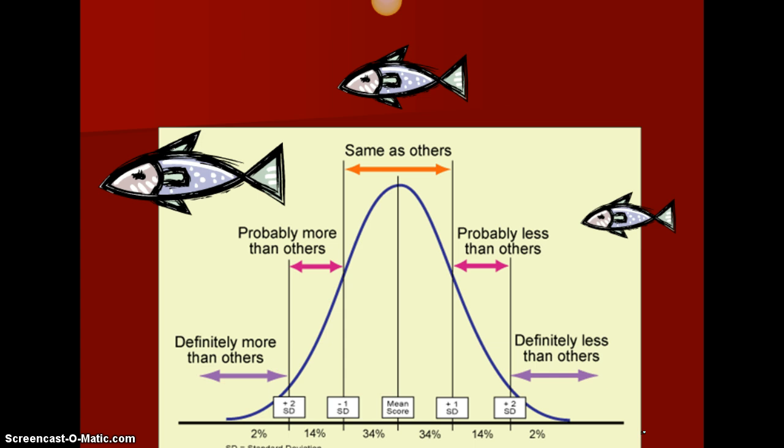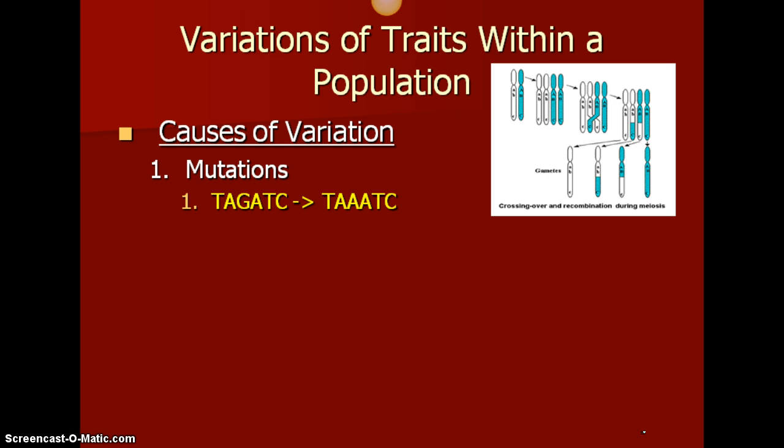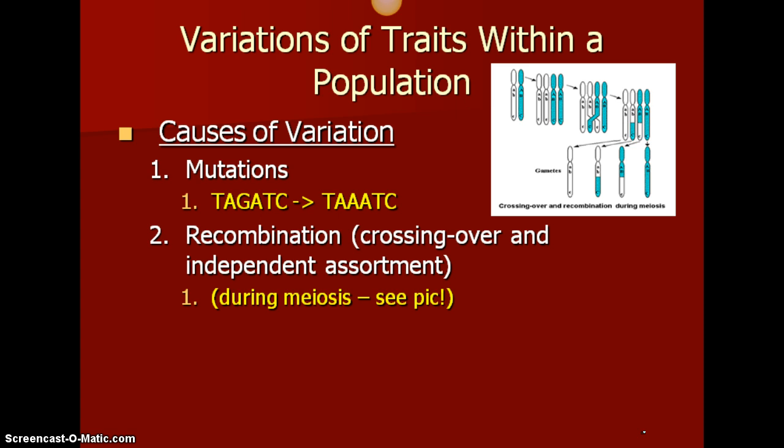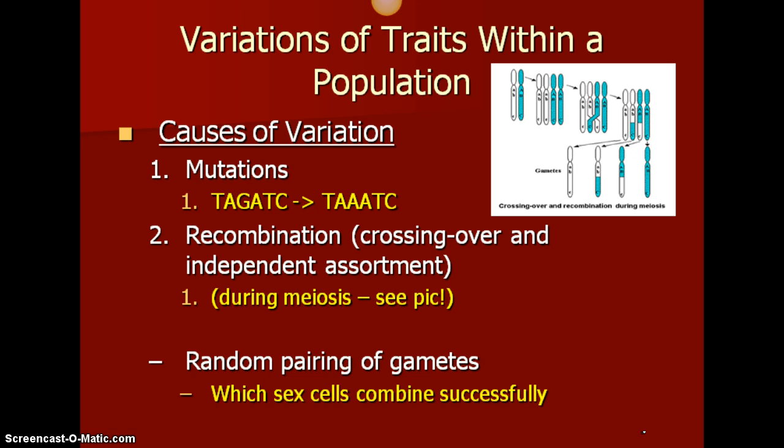Causes of variation: number one would be mutation — you can see a change in the sequence of DNA. Number two is recombination, which is when crossing over and independent assortment occur. That's back from Chapter 10, and we also talked about it last chapter. Genetic variation occurs by these two methods, and if you have more genetic variation, you have a greater chance of that species surviving. Number three is random pairing of gametes — a random combination of the sex cells — and those that combine successfully are going to have offspring.